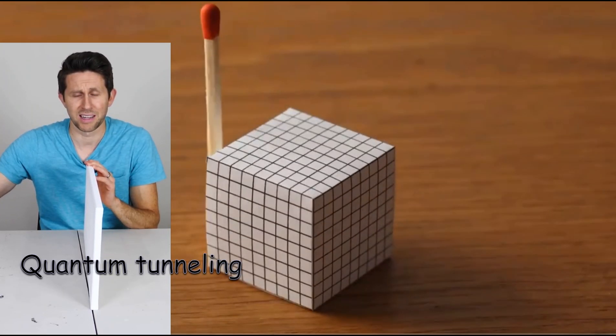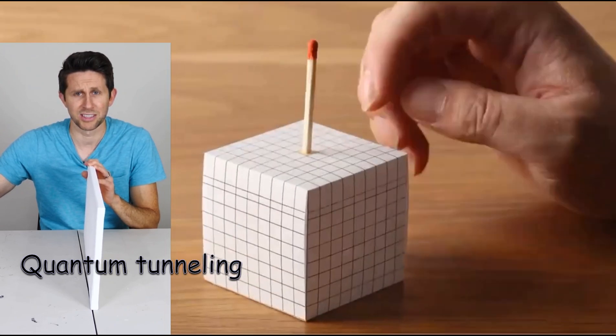So what that means is, on a quantum scale, sometimes electrons can just go through stuff.